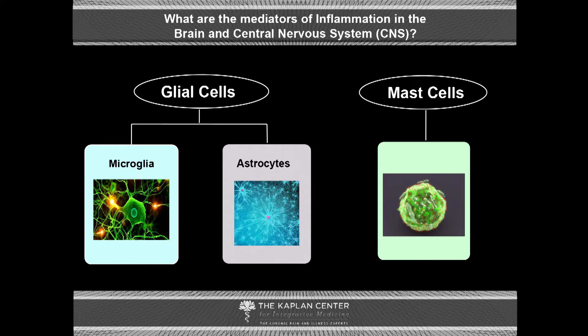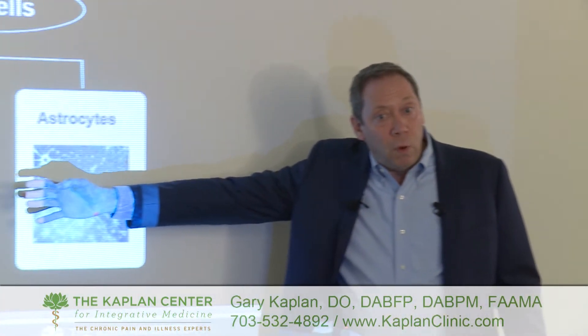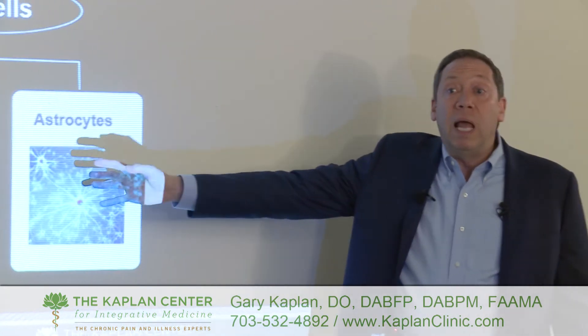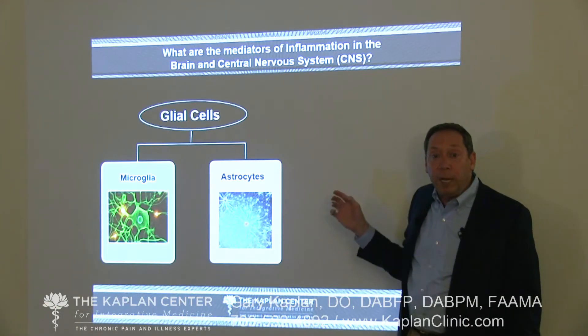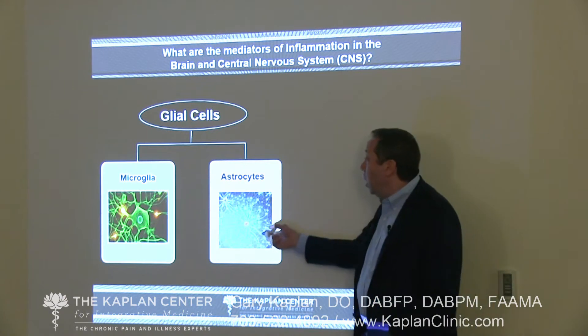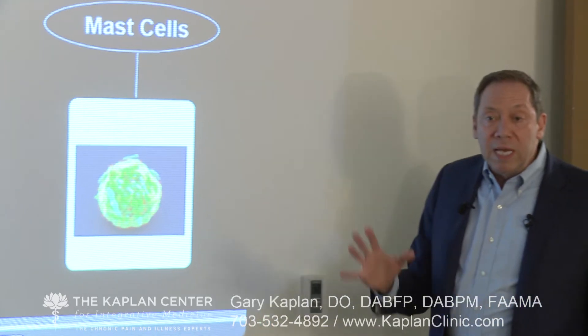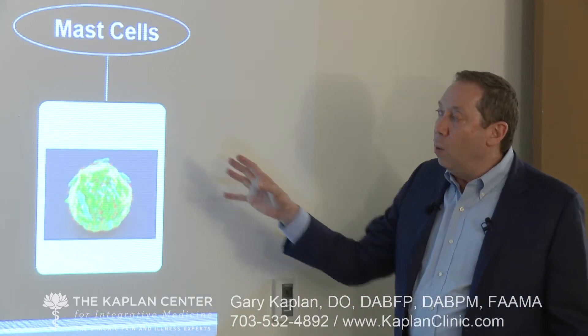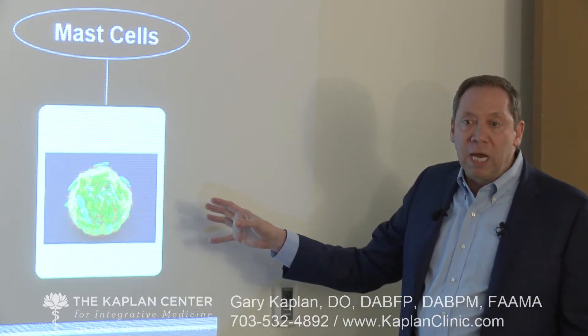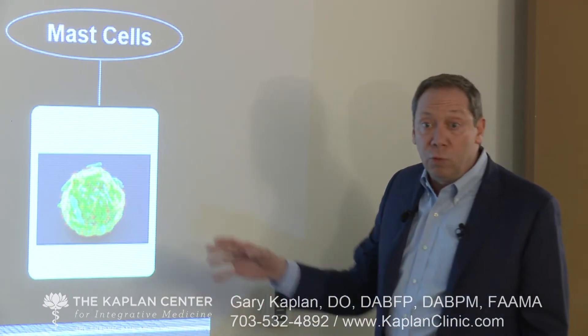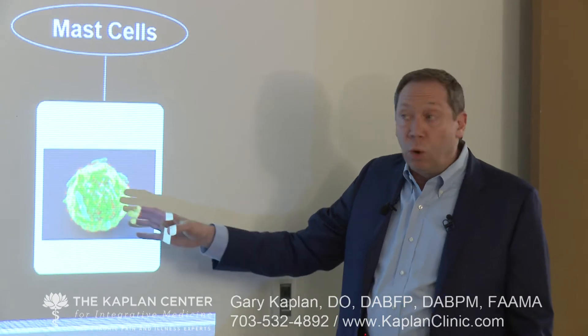What are the mediators of inflammation in the brain? The answer is relatively straightforward. When I wrote my book, the entire focus was on microglia because that's as far as we really had at the time. We now have a lot more information and there are a couple more players we have to pay attention to: astrocytes and mast cells. It's now important that we look at what's going on with these three types of cells so that we can understand how to treat the problems people are struggling with in neuroinflammatory disease.